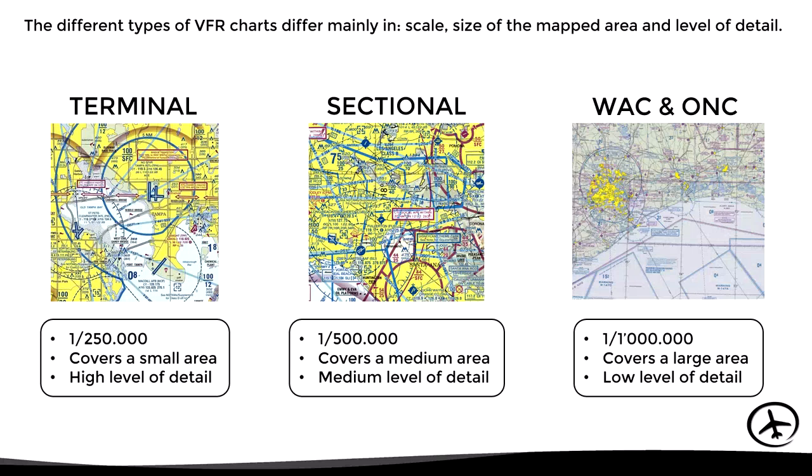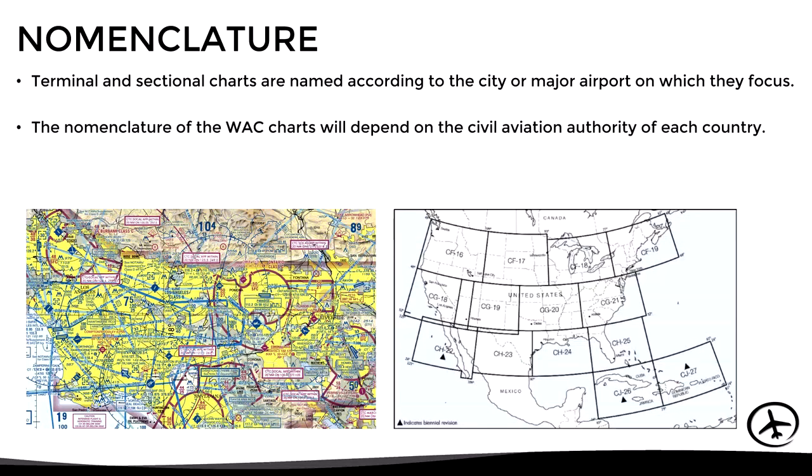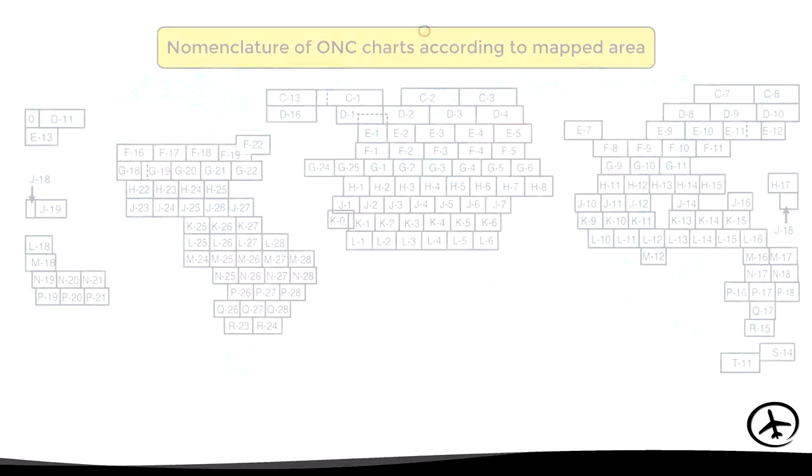Now, regarding the nomenclature of these VFR charts, terminal and sectional charts are usually named according to the city or major airport on which they focus. The nomenclature of world charts will depend on the system used by the civil aviation authority of each country, and the operational navigation charts are named according to an alphanumeric system of worldwide area division, which we can see here in this image.